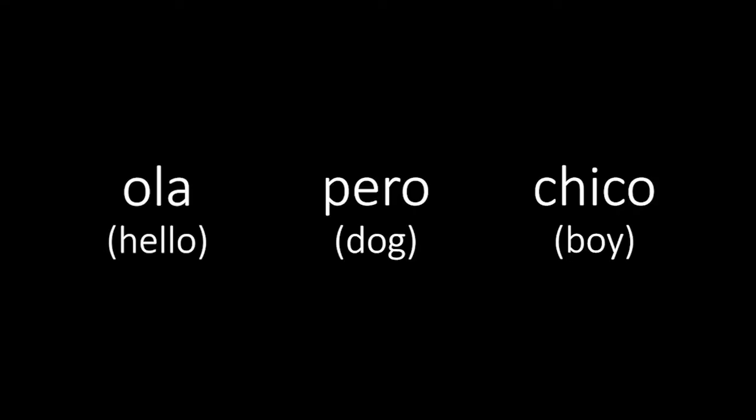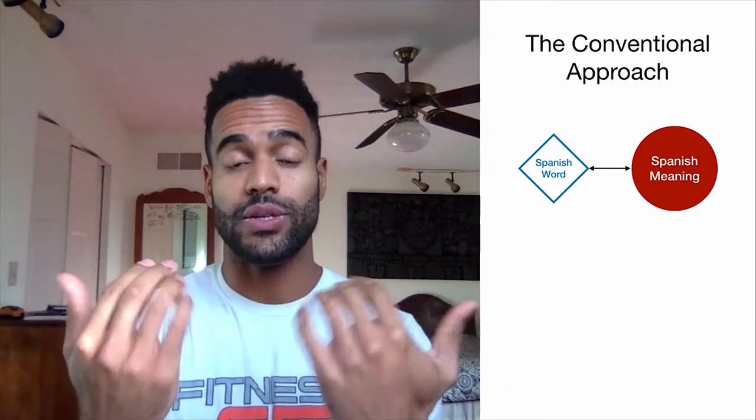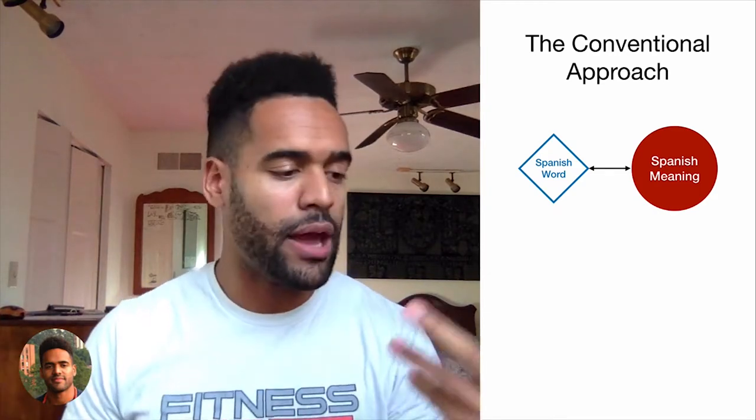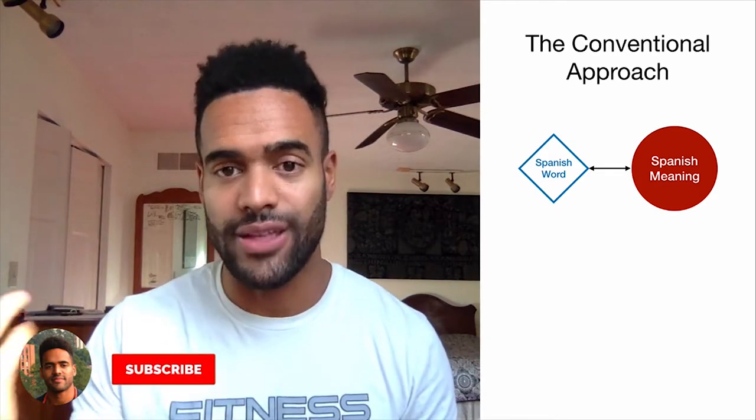The conventional approach to learning what words mean is basically like this: you take Spanish words — hola, perro, chico — and these words are associated with a specific meaning. For example, chico means boy, perro means dog.